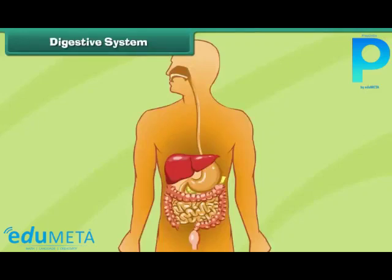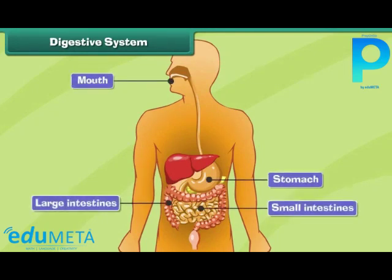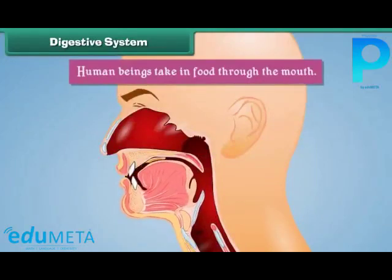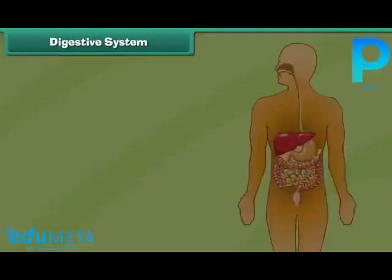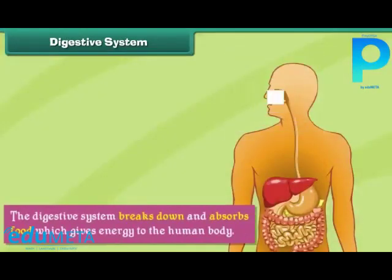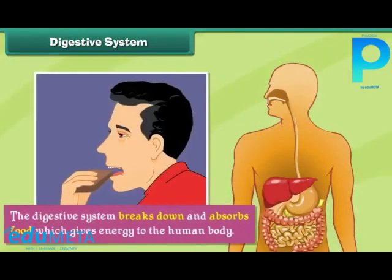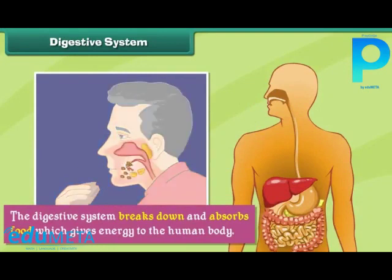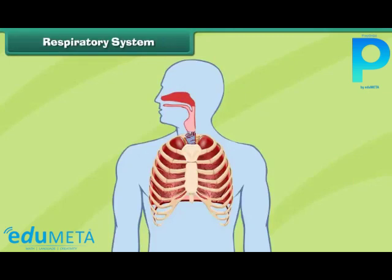The human digestive system consists of the mouth, stomach, intestines, and anus. Human beings take in food through the mouth and remove waste through the anus. The digestive system breaks down and absorbs food, which gives energy to the human body.